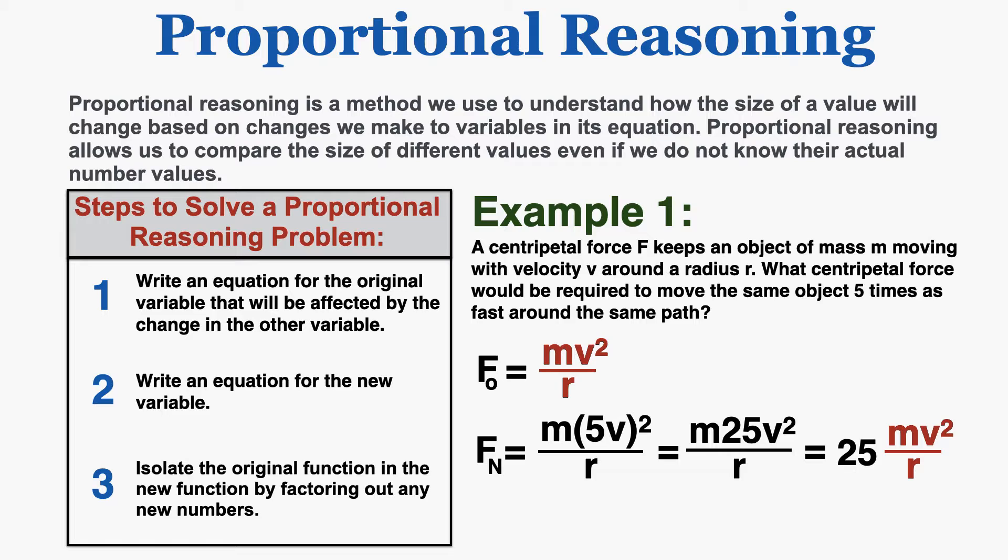I know it's the same mass, same velocity, and same radius. The lowercase v stands for the original velocity because the new velocity was five times the original. So because the original force equals that original equation, the new force is equal to 25 times the original force. The centripetal force required is 25 times the original force to make the object move five times as fast.